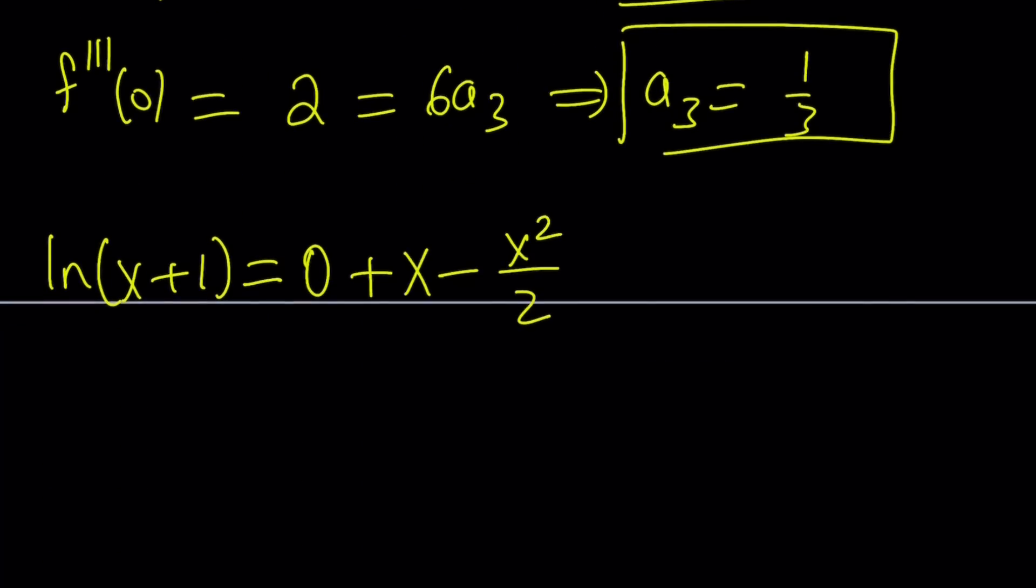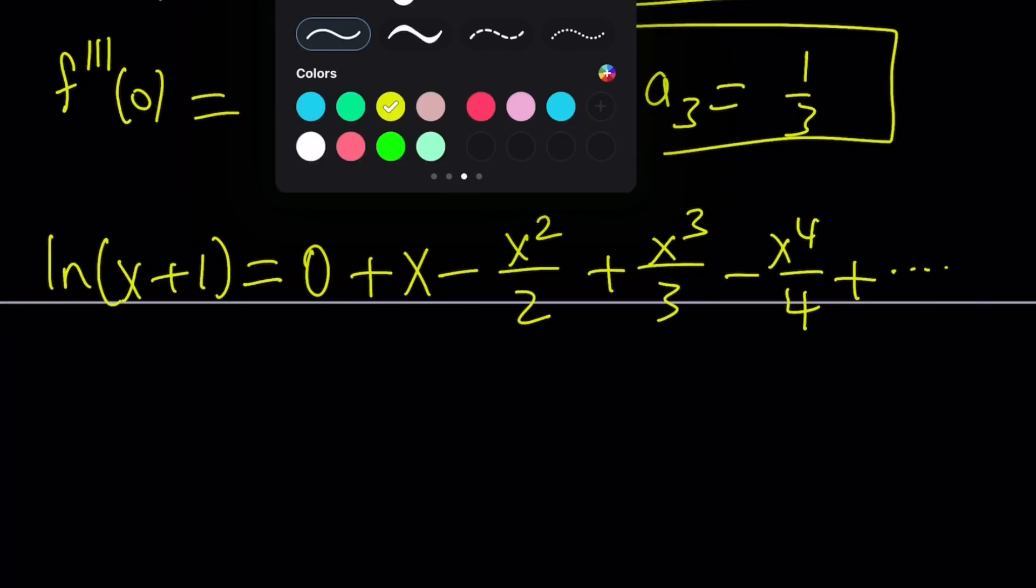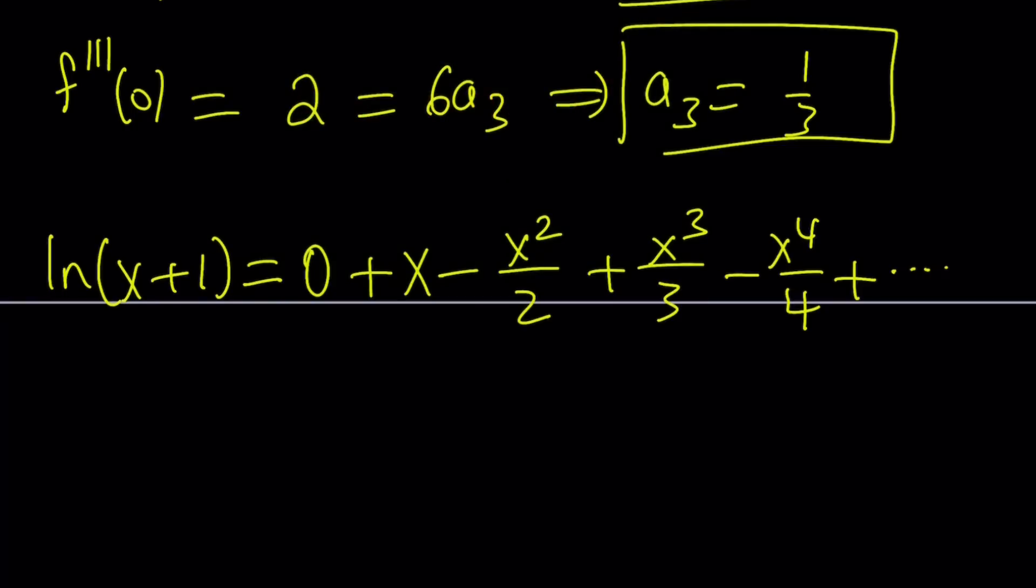And then you're going to get x² over 2, and then you're going to get x³ over 3, and then minus x⁴ over 4, x⁵ over 5, so on and so forth. It's just going to go on forever. But guess what? We don't really need that much. This is good enough. So let's go ahead and take a look at how we can use this to solve the problem.